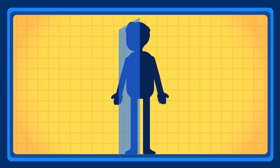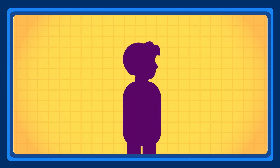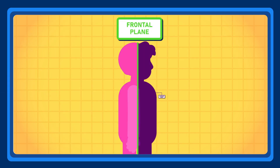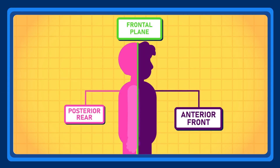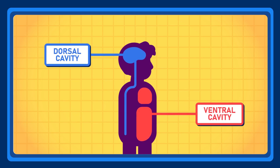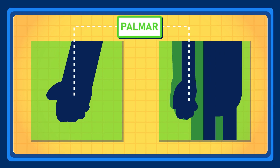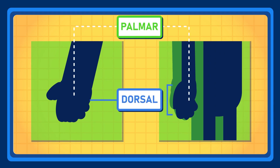Frontal or coronal planes. This plane runs vertically and forms a right angle with the median plane. It divides the body into two parts: front or anterior, and back or posterior. Sometimes, ventral and dorsal are also used instead of anterior and posterior. However, when describing the hand, other terms are used: palmar, when talking about the palm, instead of anterior; and dorsal, to describe the back of the hand, instead of posterior.